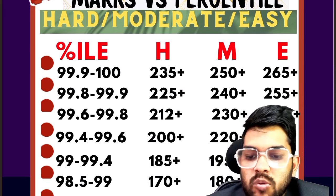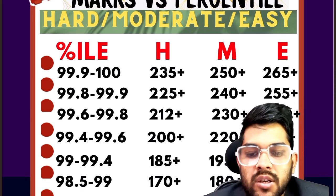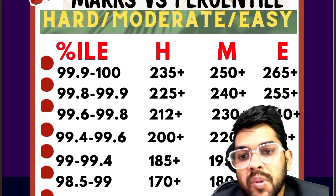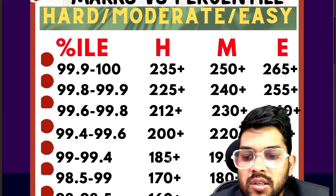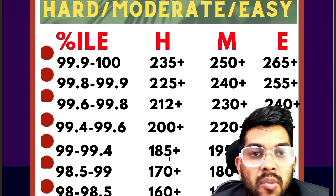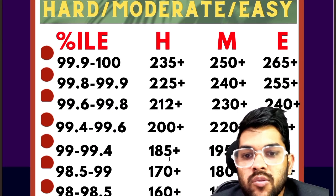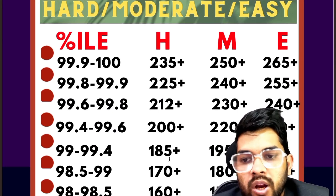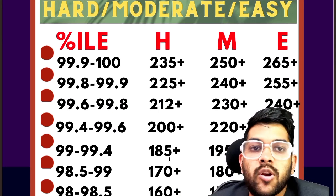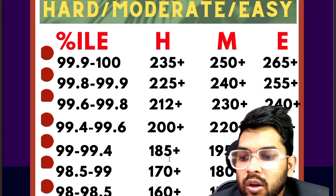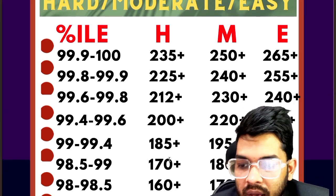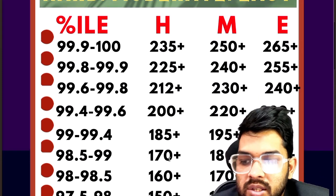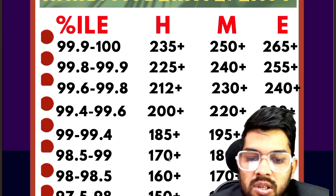For 98.5 percentile, the marks required are 170, 180, and 205 for hard, moderate, and easy paper. You can see the difference is about 30 to 35 marks depending on paper difficulty — so even if you score more marks, you might get a lower percentile than your friends because of difficulty level. For 98 percentile, it is 160, 170, and 195; for 97.5 to 98, it is 150, 160, and 185 marks.